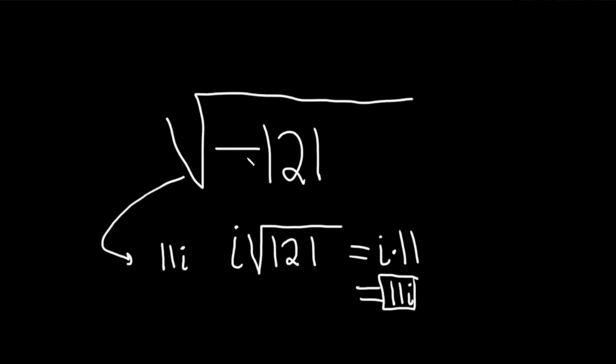So again, you just look at it. You say there's going to be an i because of the negative, the square root of 121 is 11. So this is 11i. And that's the answer.